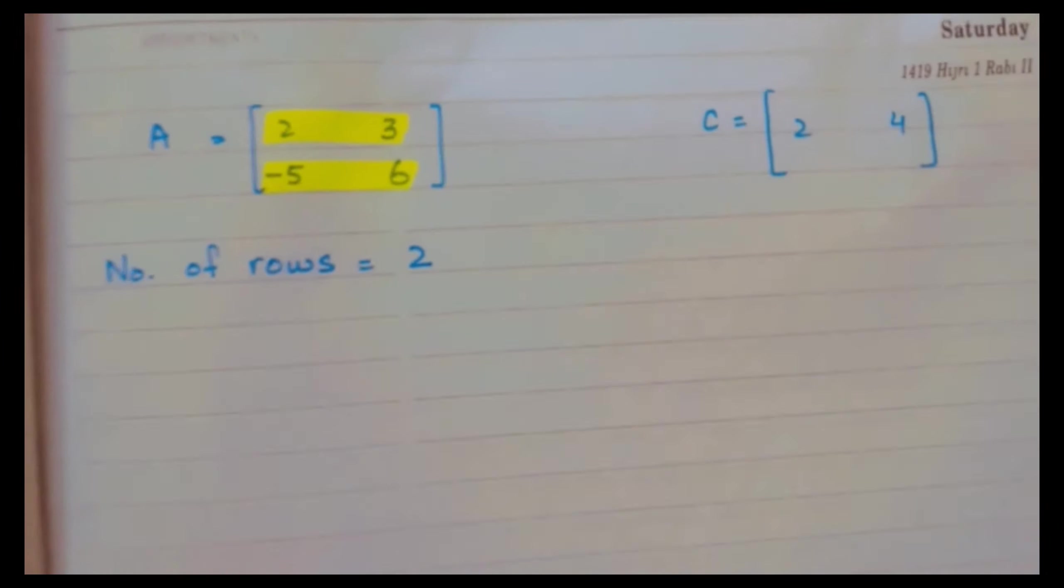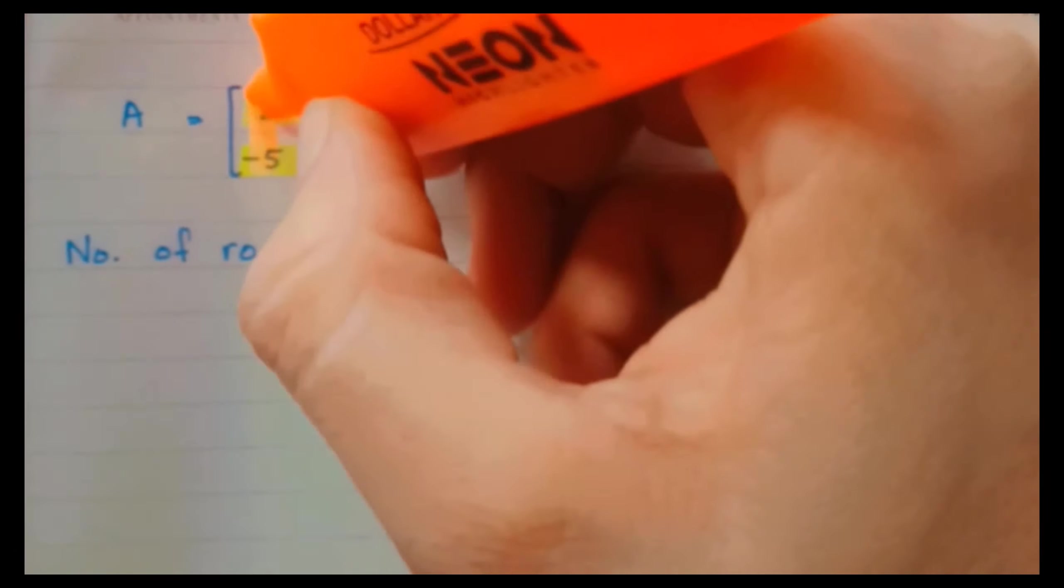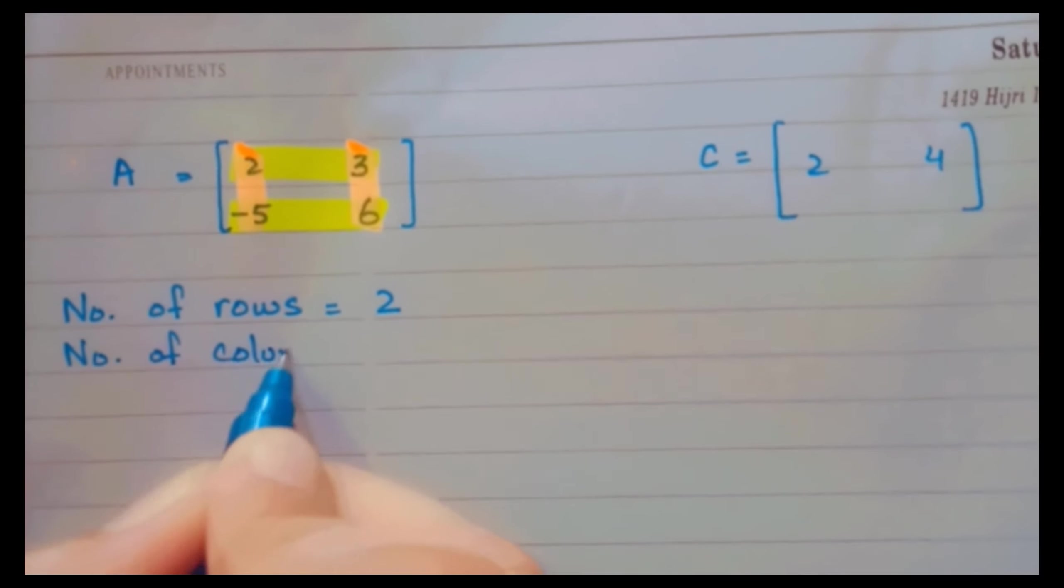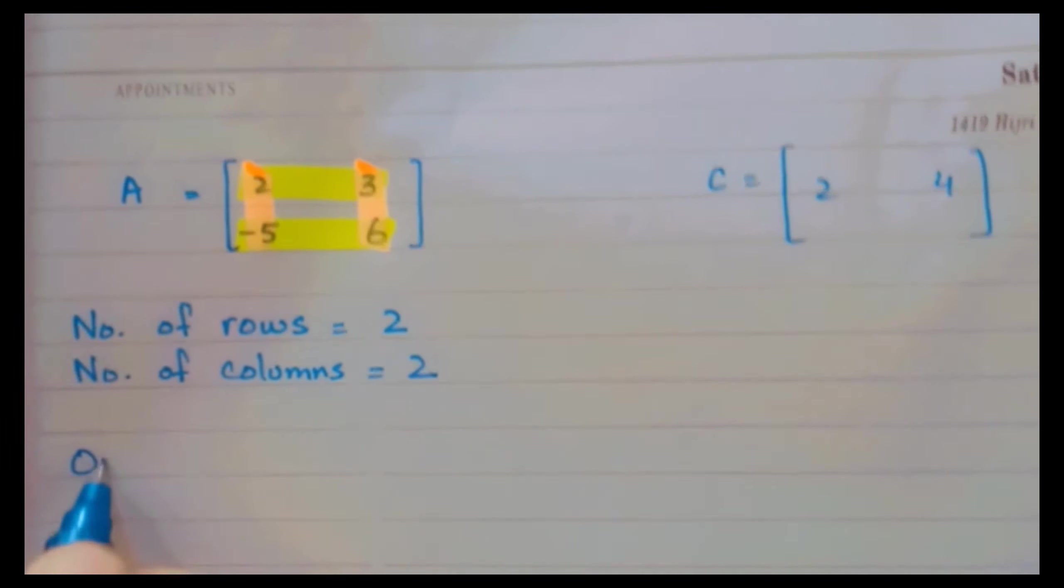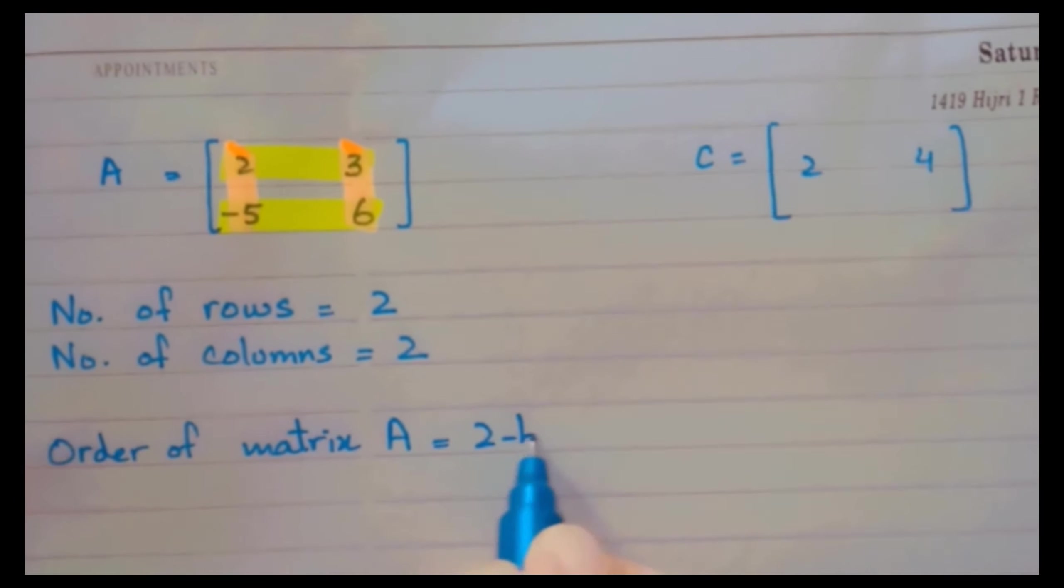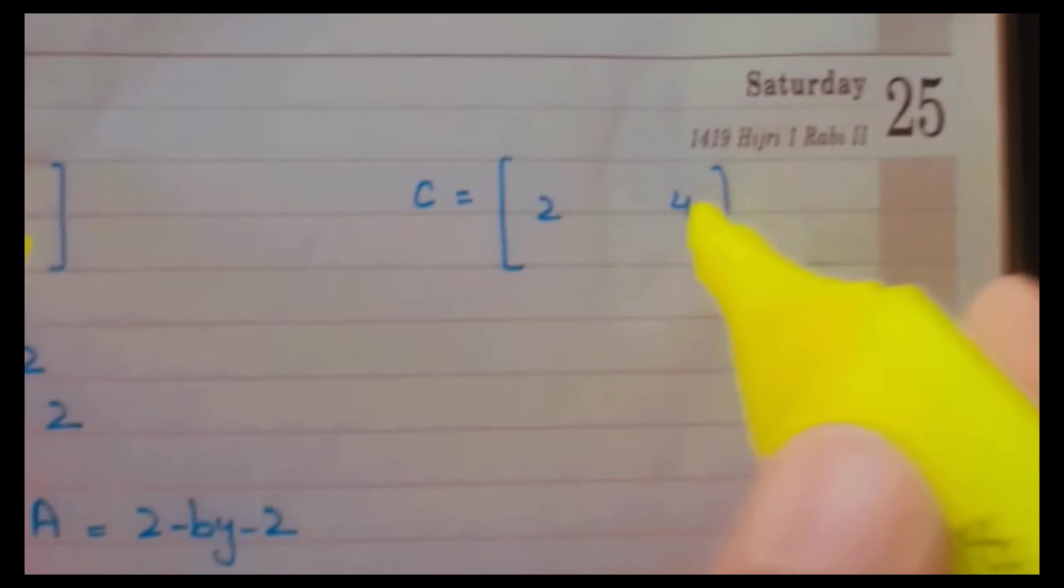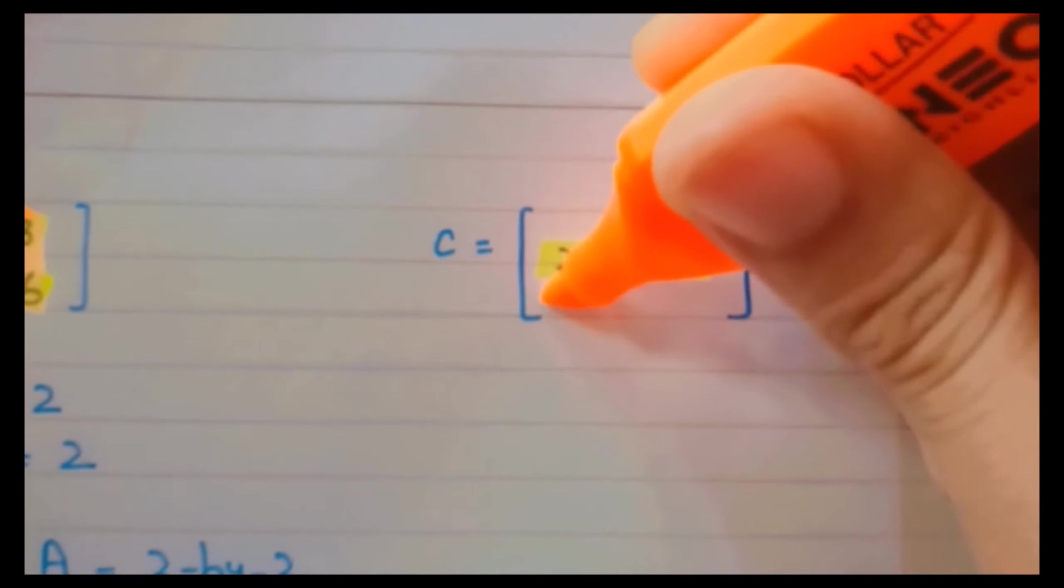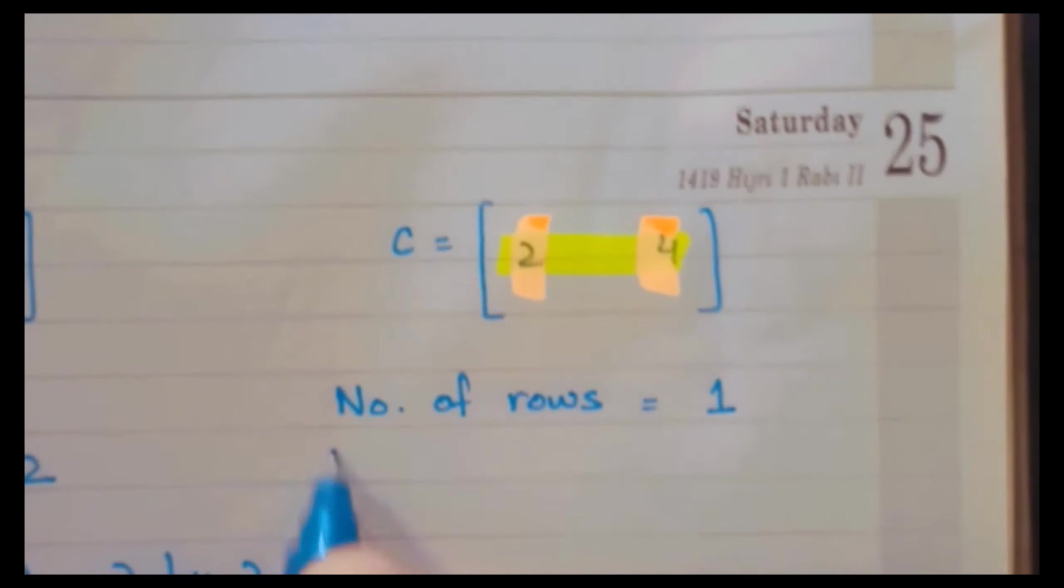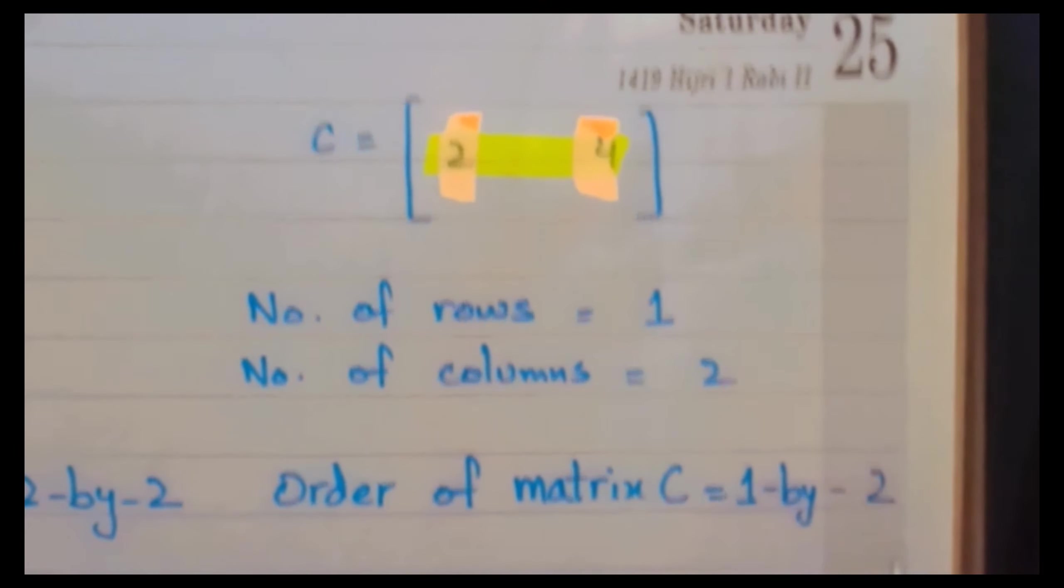Number one is A equals to [2, 3; -5, 6]. If we check here, if we highlight the rows, so they are two. Also the columns are two in number, and if we write order of the matrix A, it will be rows by column, that is 2 by 2. In C, if we highlight the rows, it's one only, and number of columns are two. So order of the matrix C would be 1 by 2.